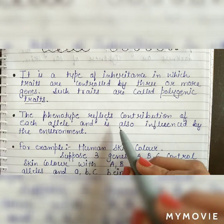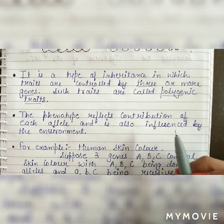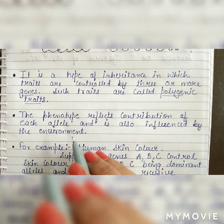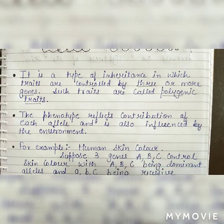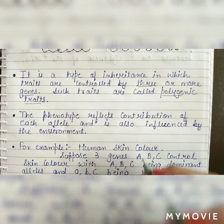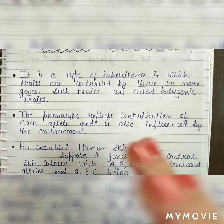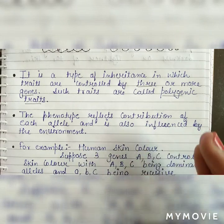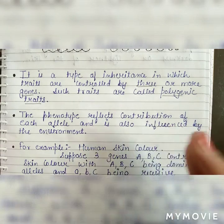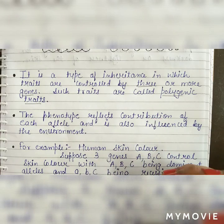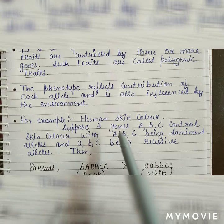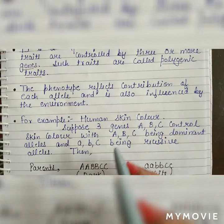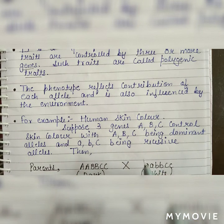जो phenotype होता है, हर एक allele का उसमें contribution reflect होता है। हर एक allele अपने आपको express करती है, चाहे कम करे या जादा — हर एक allele का contribution phenotype में दिखता है। For example, human skin color — human के skin color में भी हम polygenic inheritance को study कर सकते हैं।